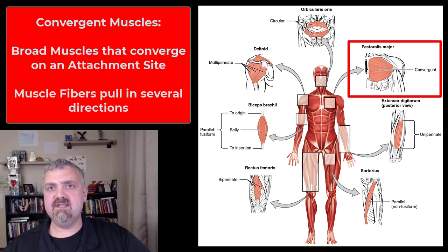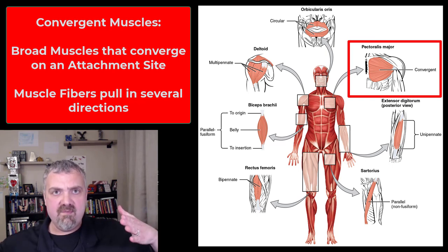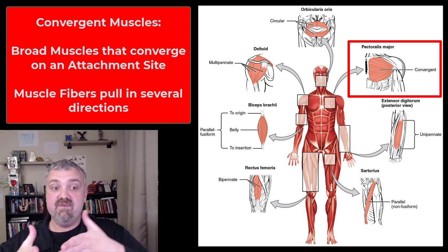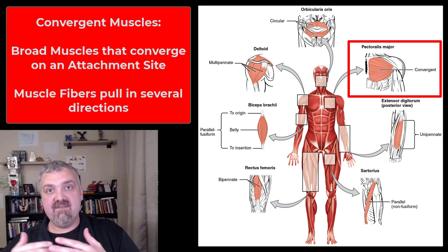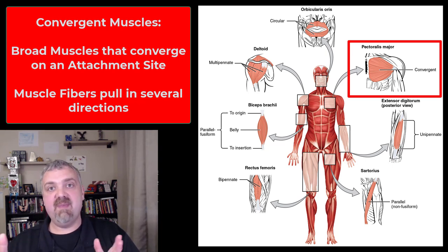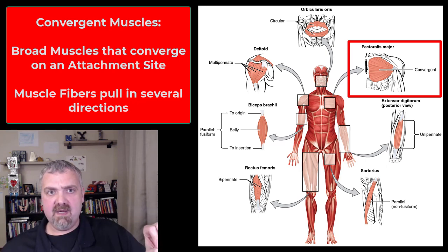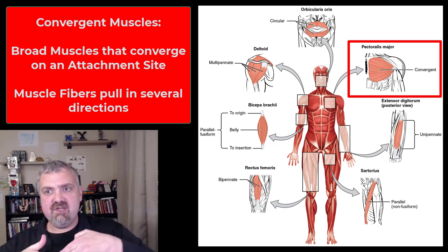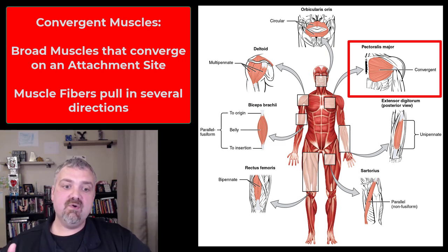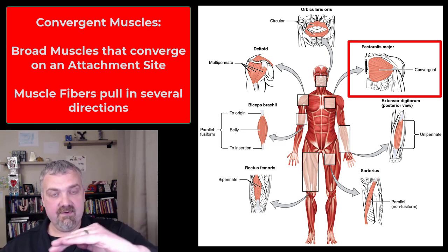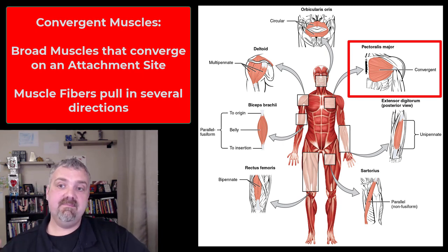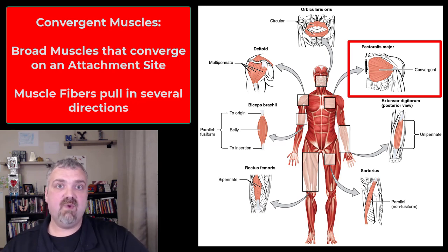Convergent muscles start broad and all the muscle fibers come from different directions to converge on an attachment site — either a tendon, an aponeurosis, which is a flat sheet-like tendon, or a raphe, which is a thin band of collagen. Convergent fibers aren't running in parallel; they're coming from different directions and converging on their attachment. The textbook example is the pectoralis major, which has fibers running down, straight across, and up. These muscles allow for all sorts of different types of movements.